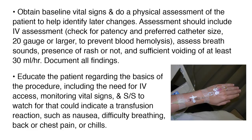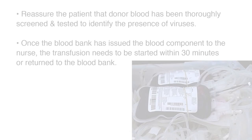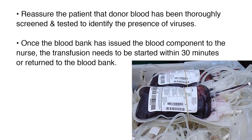Obtain baseline vital signs and do a physical assessment of the patient to help identify later changes. Assessment should include IV assessment — check for patency and preferred catheter size, 20 gauge or larger, to prevent blood hemolysis. Assess for breath sounds, the presence of rash or not, and sufficient voiding of at least 30 mL per hour. Document all findings. Educate the patient regarding the basics of the procedure, including IV access, monitoring vital signs, and signs and symptoms of a transfusion reaction such as nausea, difficulty breathing, back or chest pain, or chills. Reassure the patient that donor blood has been thoroughly screened and tested to identify the presence of viruses.